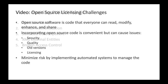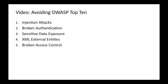OWASP Top 10 is an open source security framework that identifies the most critical security vulnerabilities your program might be attacked with. These include injection attacks, broken authentication, sensitive data exposure, XML external entities, broken access controls, and many other attack types. OWASP is an open source foundation for application security. You can visit owasp.org to learn more about the OWASP Top 10.